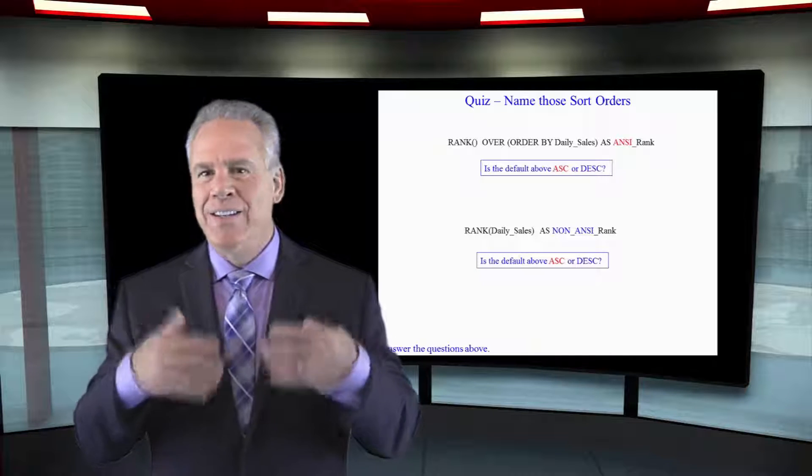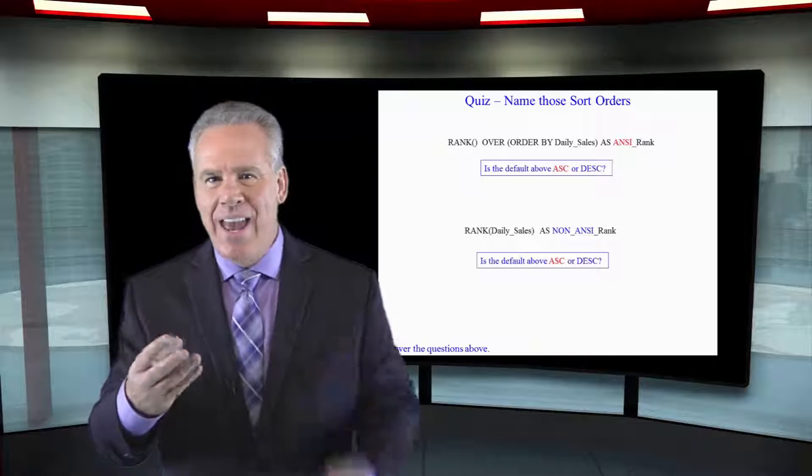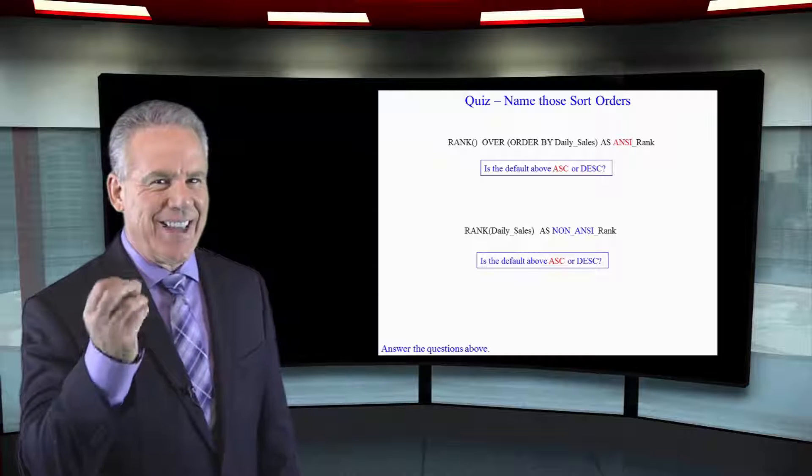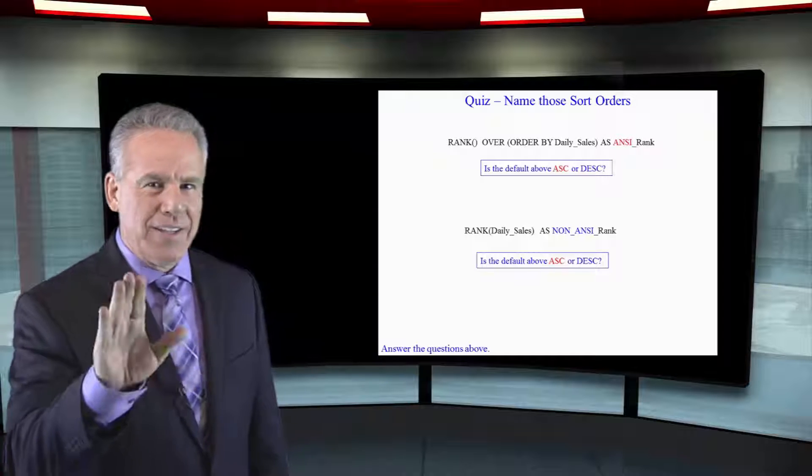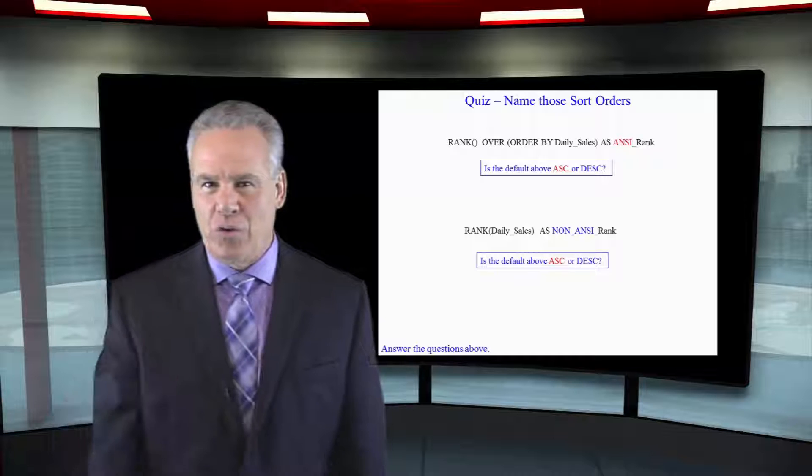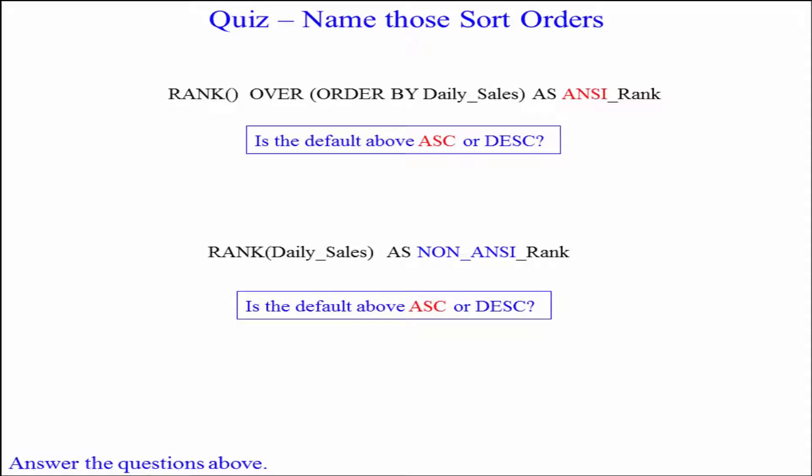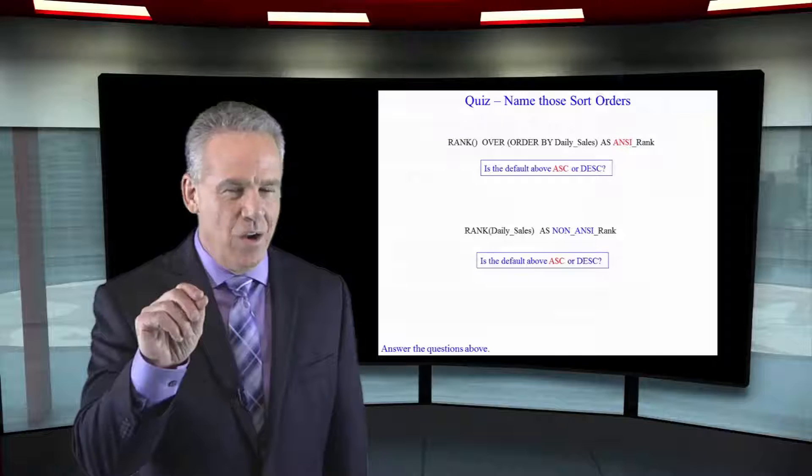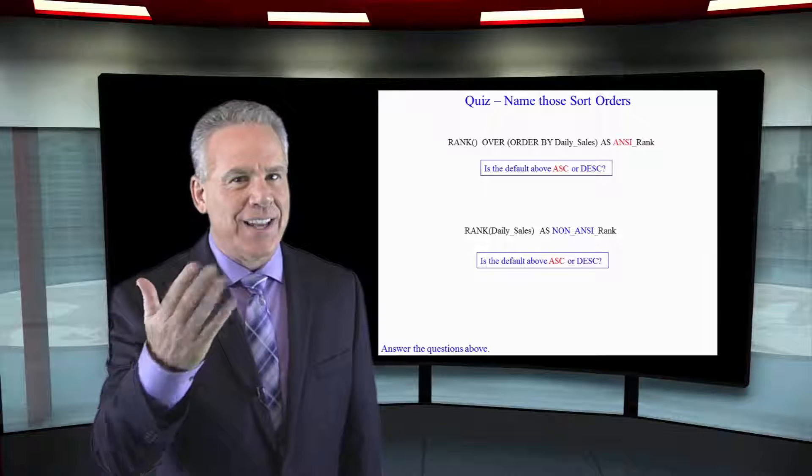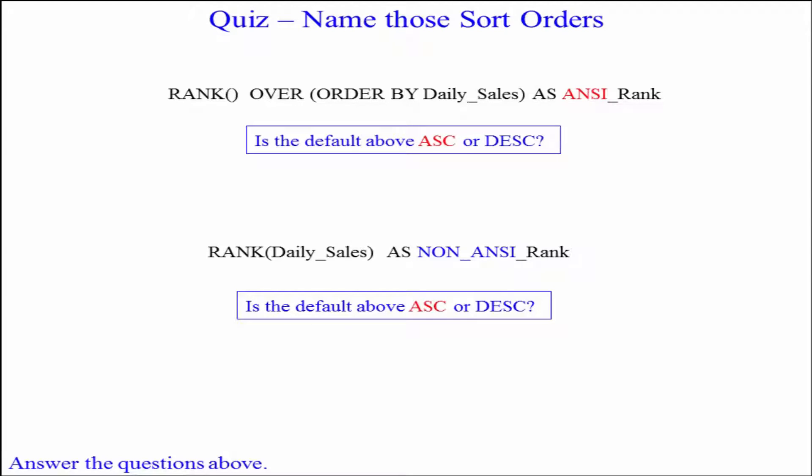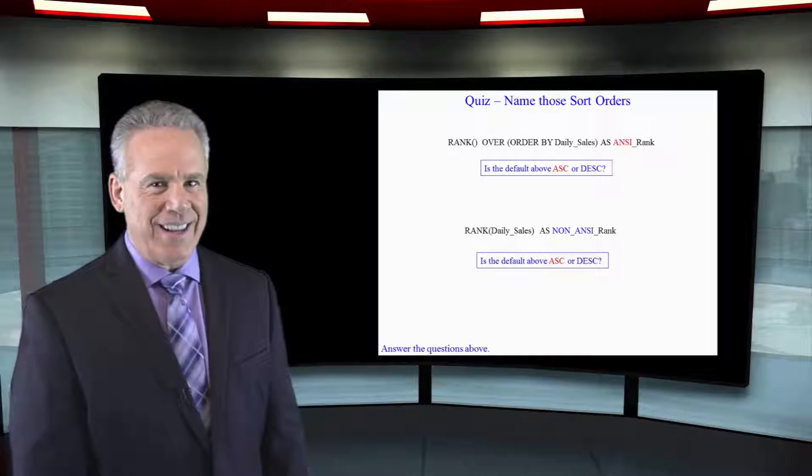We've seen Teradata syntax doing the rank, and we've seen ANSI syntax doing the rank. I want you to think about it and tell me what the default sort order is. Let's look at the first example. Rank open paren over order by daily sales. Now, is that ascending or descending? Let's take a look here at the bottom. We're going to rank the daily sales. Is that ascending or descending?